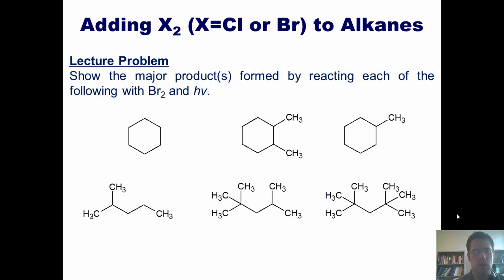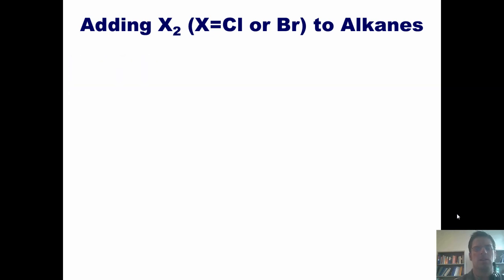So this brings us to another lecture problem. I want you to show the major products formed by reacting each of the following with bromine Br2 and light. Once again, you're welcome to pause the video at this point because I'm totally going to show you the answers momentarily. I should point out, though, that I'm not going to show you answers to all of these, but just a couple key ones, and let you do the rest on your own. So let's go ahead and begin. For every single one of these problems, the first step is going to be the bromine-bromine bond in Br2 separating out homolytically, like this, to form two individual atoms of bromine radical. That is the initiation step.